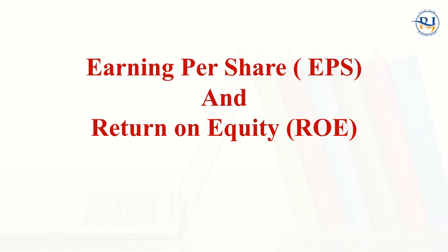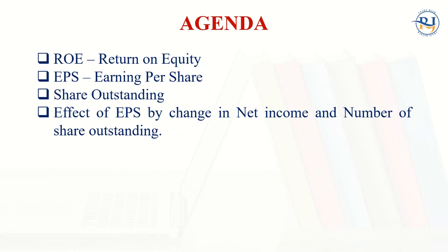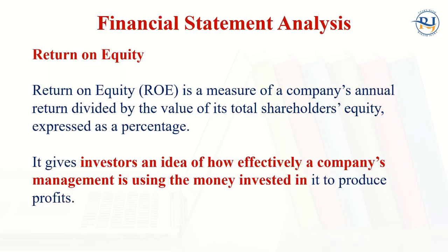In this lecture I am going to explain about EPS and ROE. EPS is Earning Per Share and ROE is Return on Equity. These are the most important terms used in the corporation. By the end of this lecture you will be able to understand the meaning of ROE and EPS, what share outstanding is, and the effect of earning per share by change in net income and number of shares outstanding.